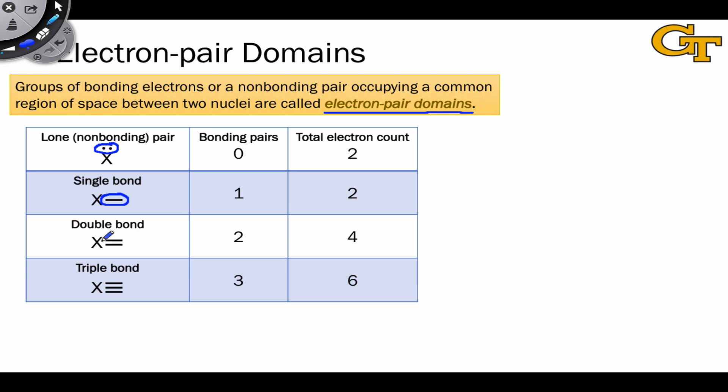The double bond is an electron pair domain that includes both bonds with two bonding pairs and four electrons total. The triple bond is considered an electron pair domain with three bonding pairs and six electrons total. Each of these is considered a single electron pair domain.